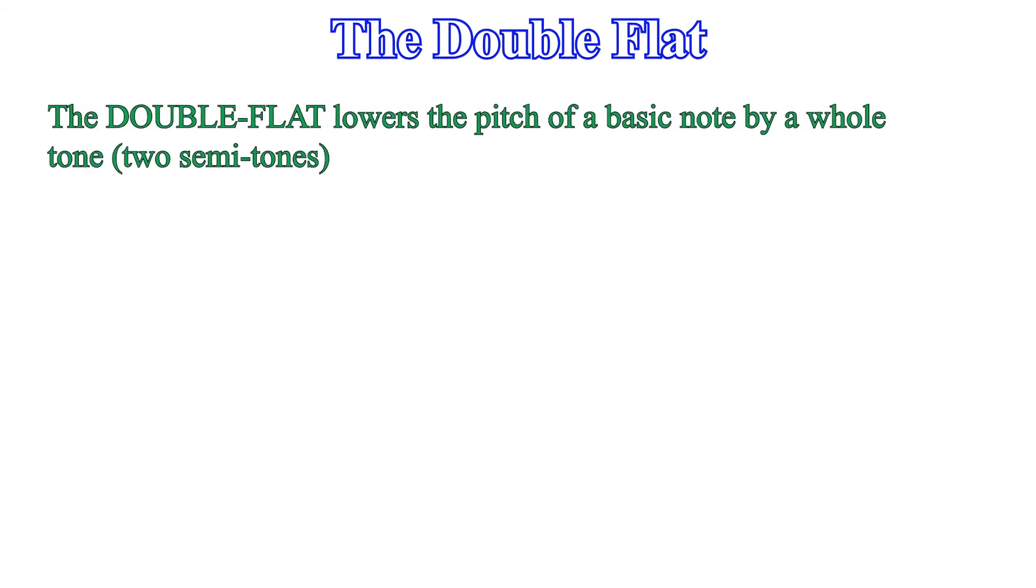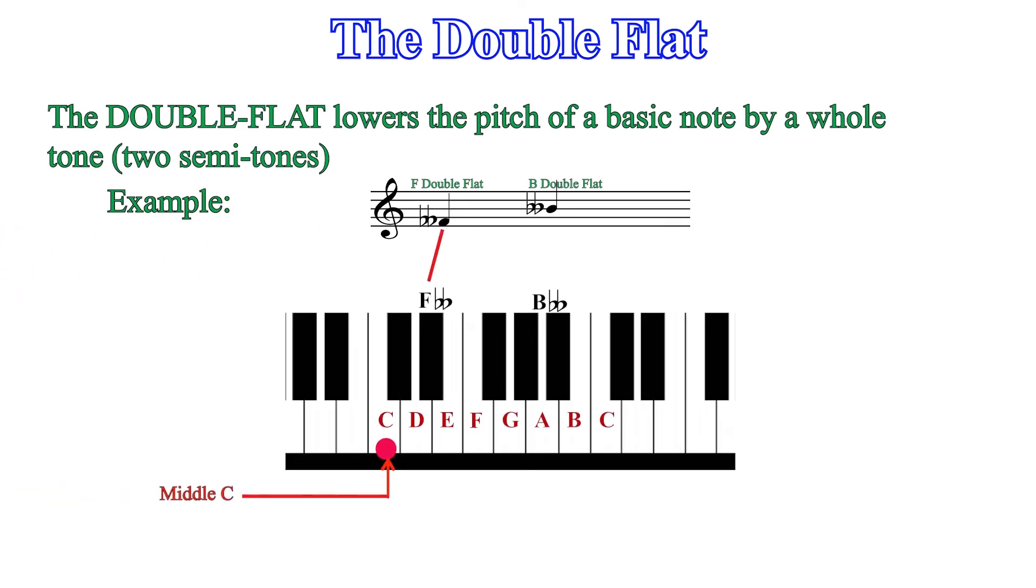The double flat. The double flat lowers the pitch of a basic note by a whole tone or two semitones. For example, F double flat is shown. F flat will be E because E is a semitone from F. F double flat will then be two semitones from F, which will then fall on the next black key behind E, which is E flat. So F double flat is equivalent to E flat. In this case, the double flattened note falls on a black key, and this is the sound of F, F flat, F double flat.